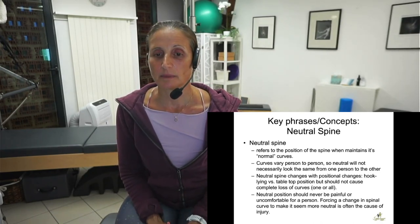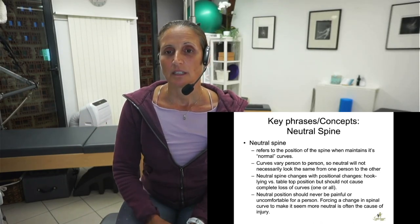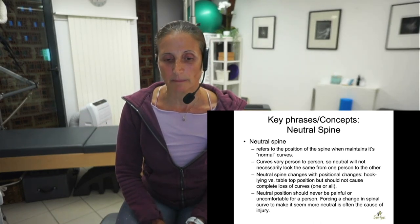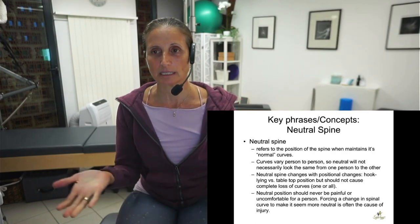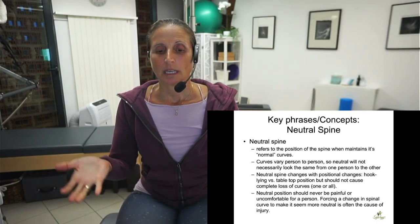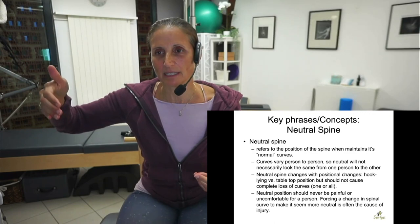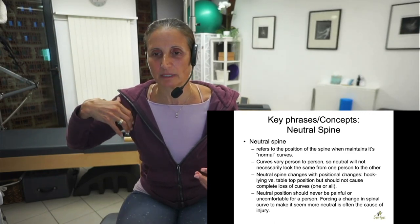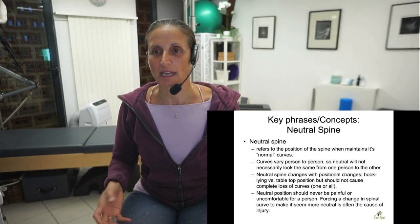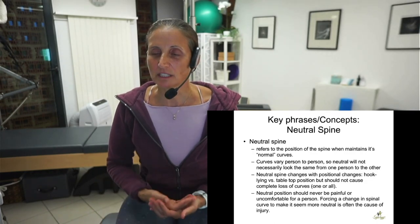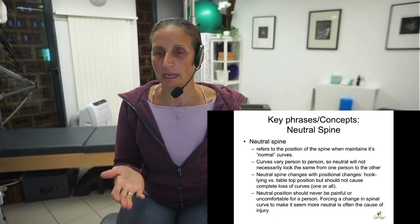Every person's spinal curves vary. So when I'm working with somebody, the way I like to find that neutral spine is to have them lay down in what I call 'landing' — land with their legs bent in the hook lying position. I have them take a few breaths and relax. That position to me is going to be their neutral spine position.